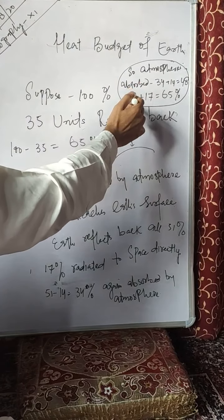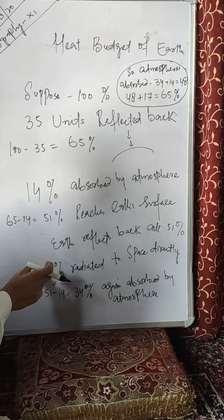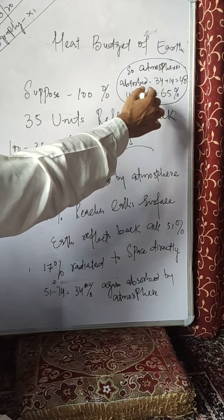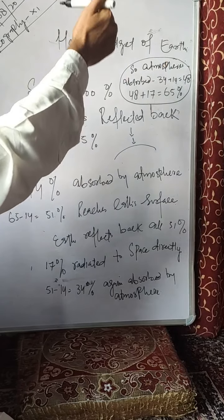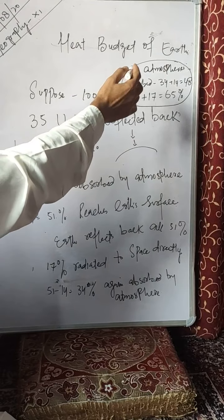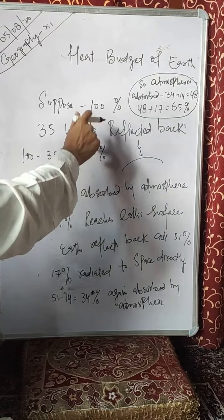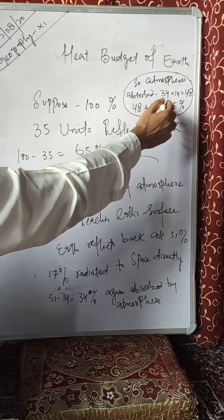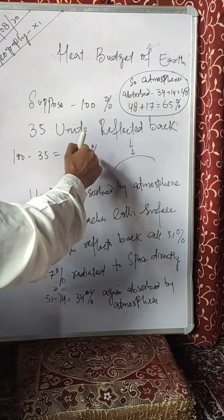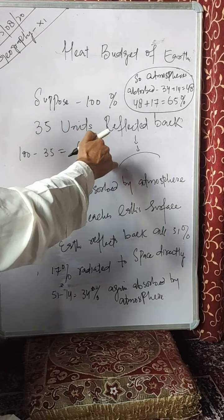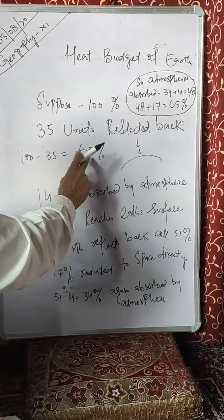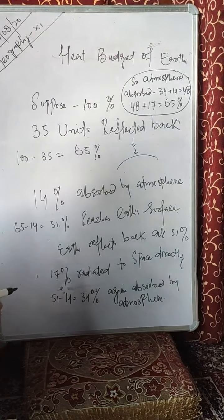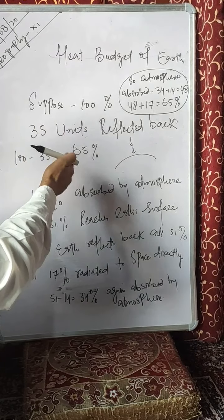This 48% from the atmosphere plus the 17% which is radiated directly from the earth's surface towards space equals 65%. This equals the amount of insolation received — 65% is reaching the earth's surface and atmosphere. So the amount received equals the amount reflected back: 65% equals 65%. This balance is known as the heat budget of the earth. By this, the earth is neither getting hotter nor colder.